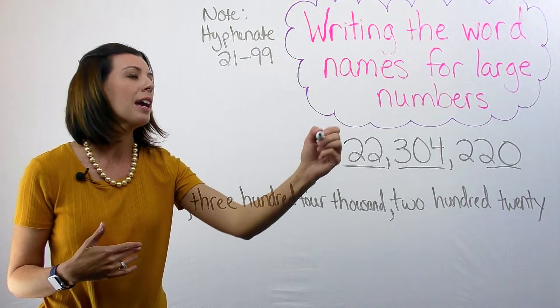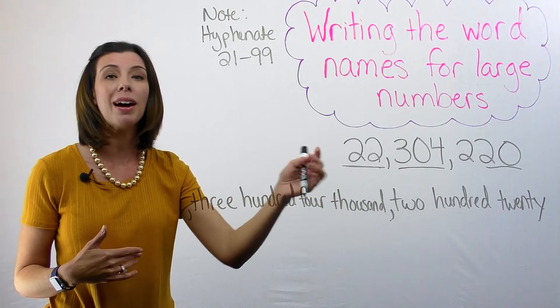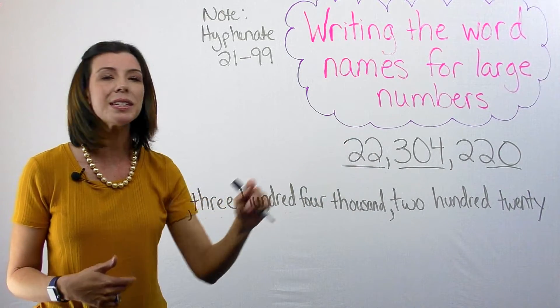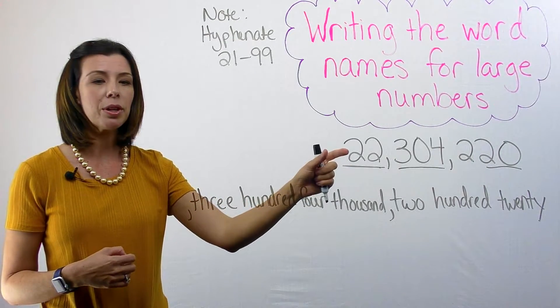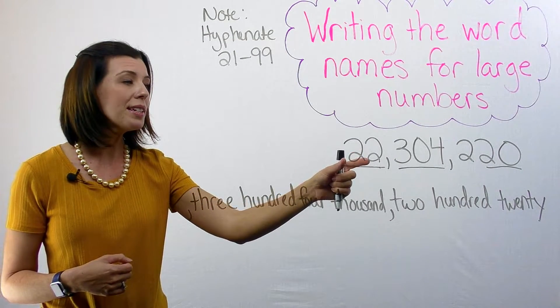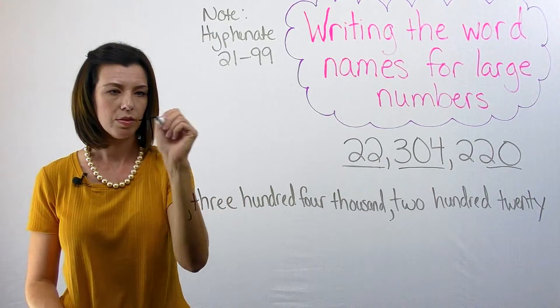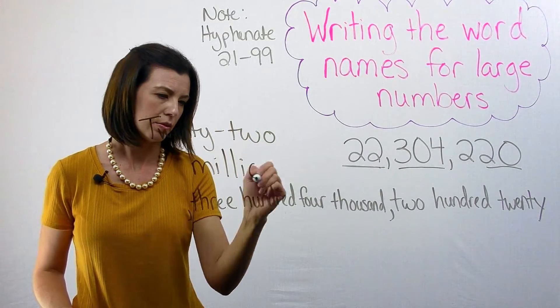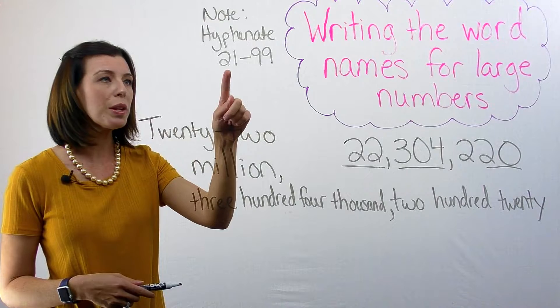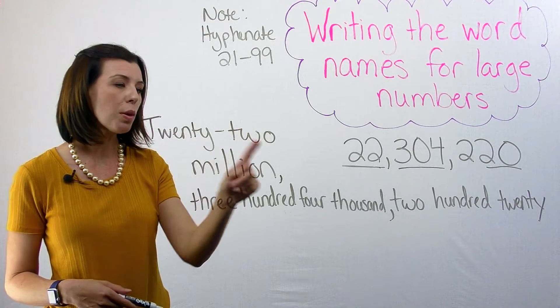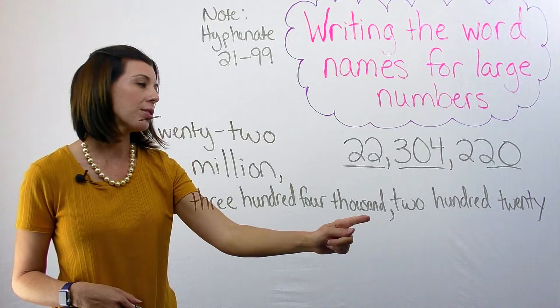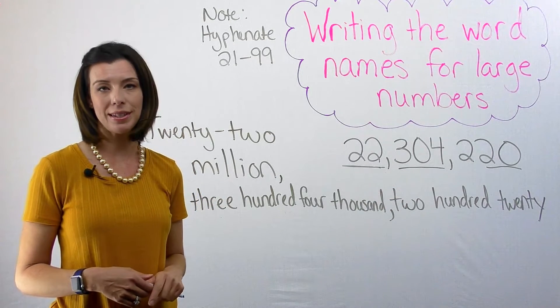Again, if I kept going, and I had another place value in a comma, I would have the billions chunk. So I know this is the millions chunk. So again, I'm going to do it the same way. So I'm going to read this as 22 million. Just a reminder, because we are above 21, we are going to hyphenate this number. So I end up with 22,304,220.